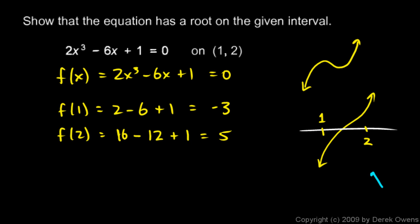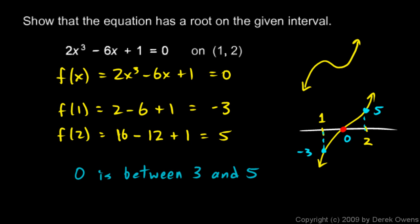So this graph has a y value of negative 3 at x equals 1, and a y value of positive 5 at x equals 2. Where does it have a zero — a y value of zero? Zero is between negative 3 and 5. This function is continuous, and the intermediate value theorem applies. So somewhere between 1 and 2, it must go through all values between negative 3 and 5. Since zero is between negative 3 and 5, there is some x value on this interval where f of x equals zero.